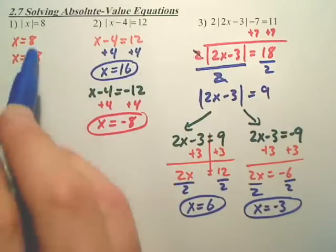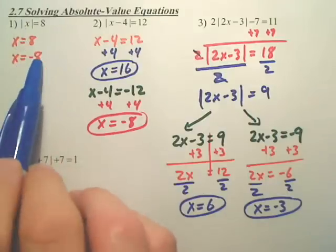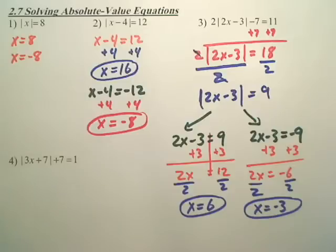You will always have two answers with absolute values. Even here are two answers, because what's inside of here can be a positive 8 or a negative 8, because the absolute value will make it positive.